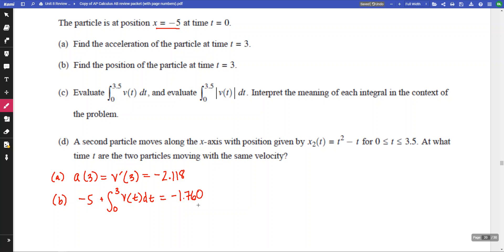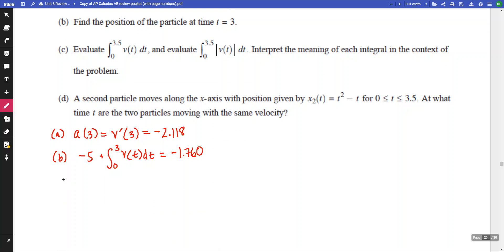Then, evaluate the integral from 0 to 3.5 of velocity. And then evaluate the integral of 0 to 3.5 of the absolute value of velocity. And interpret the integral of each in context. So for part c, integral from 0 to 3.5 of our velocity is the net change in the position of the particle.